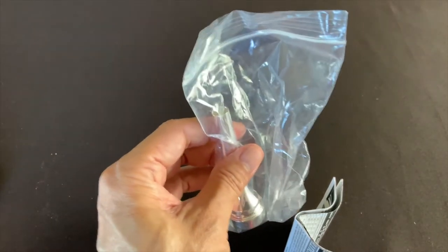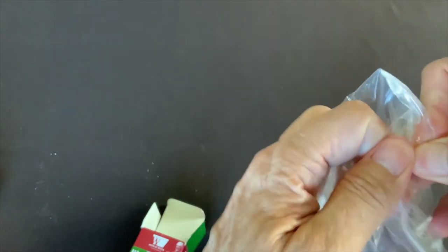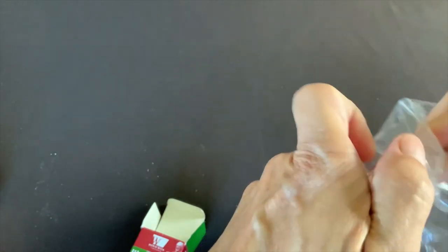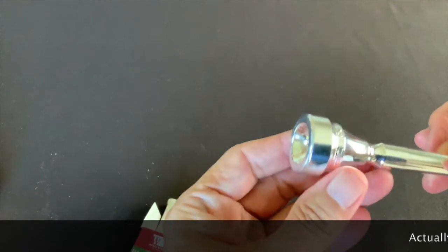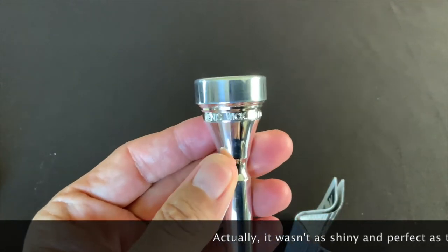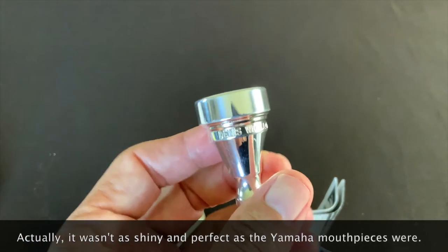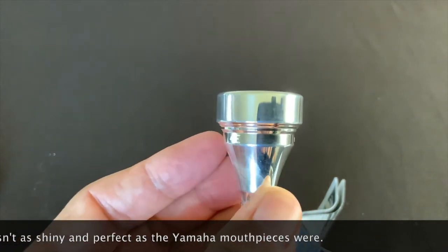All right, so I think this will be a little easier to undo than the Yamaha ones that were securely wrapped in plastic. Let's take a sharp object to open up. Oh, shiny. All right, so this is the Dennis Wick. Let's see, where is it? Dennis Wick 4E.